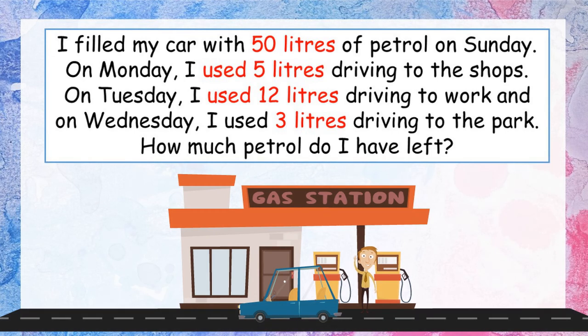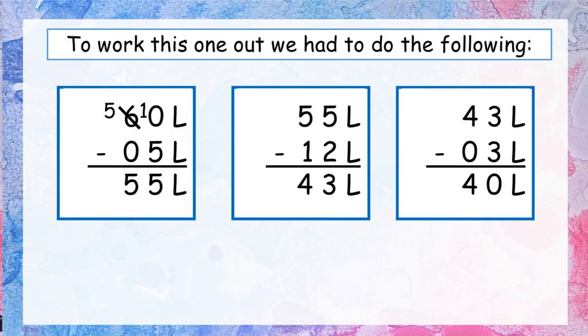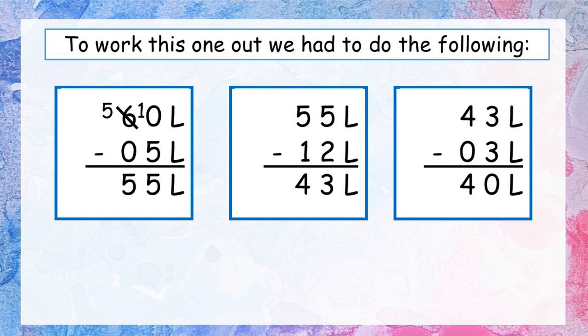The important information: I started with 50 litres, I used 5 litres, I used 12 litres, and I used 3 litres. The word 'used' tells us the number is going down — it's a takeaway sum. We have multiple sums: start with 50, use 5 litres — that brings us to 45. On the second day, use 12 litres: 45 take away 12 gives 33 litres. On the last day, use another 3 litres: 33 take away 3 leaves 30 litres in the tank. So our answer is 30 litres. Give yourself a huge tick if you got that one because it was tricky.